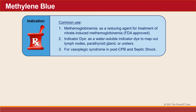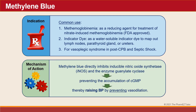Methylene blue is used to treat methemoglobinemia, which is its FDA-approved indication. It's also used as an indicator dye to map out lymph nodes, the parathyroid gland, or ureters, and it is now being investigated for use in vasoplegic syndrome in post-cardiopulmonary bypass patients and in septic shock. The mechanism of action of methylene blue is that it directly inhibits inducible nitric oxide synthetase and the enzyme guanylate cyclase. This prevents the accumulation of cyclic GMP, thereby raising blood pressure by preventing vasodilation.